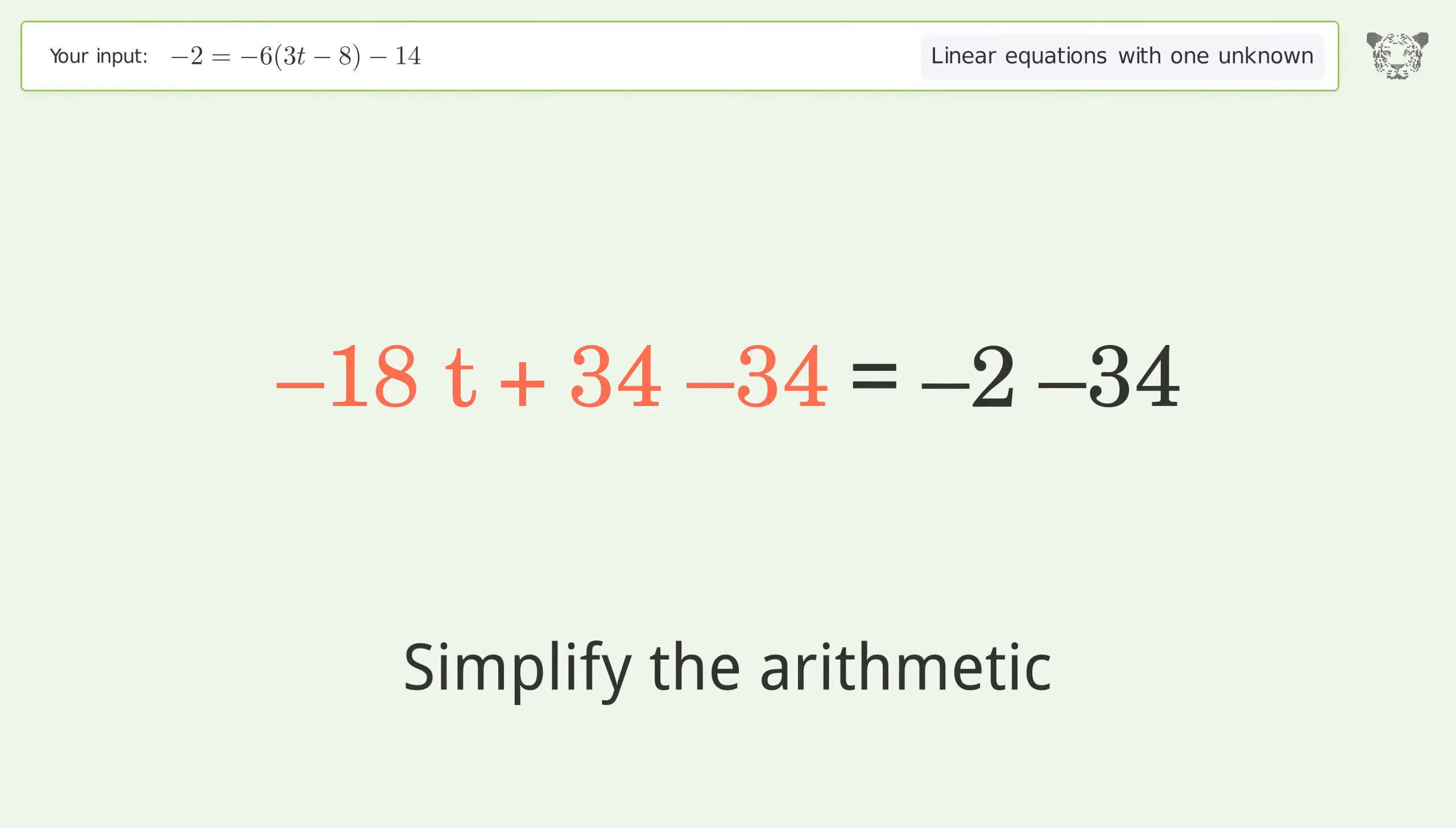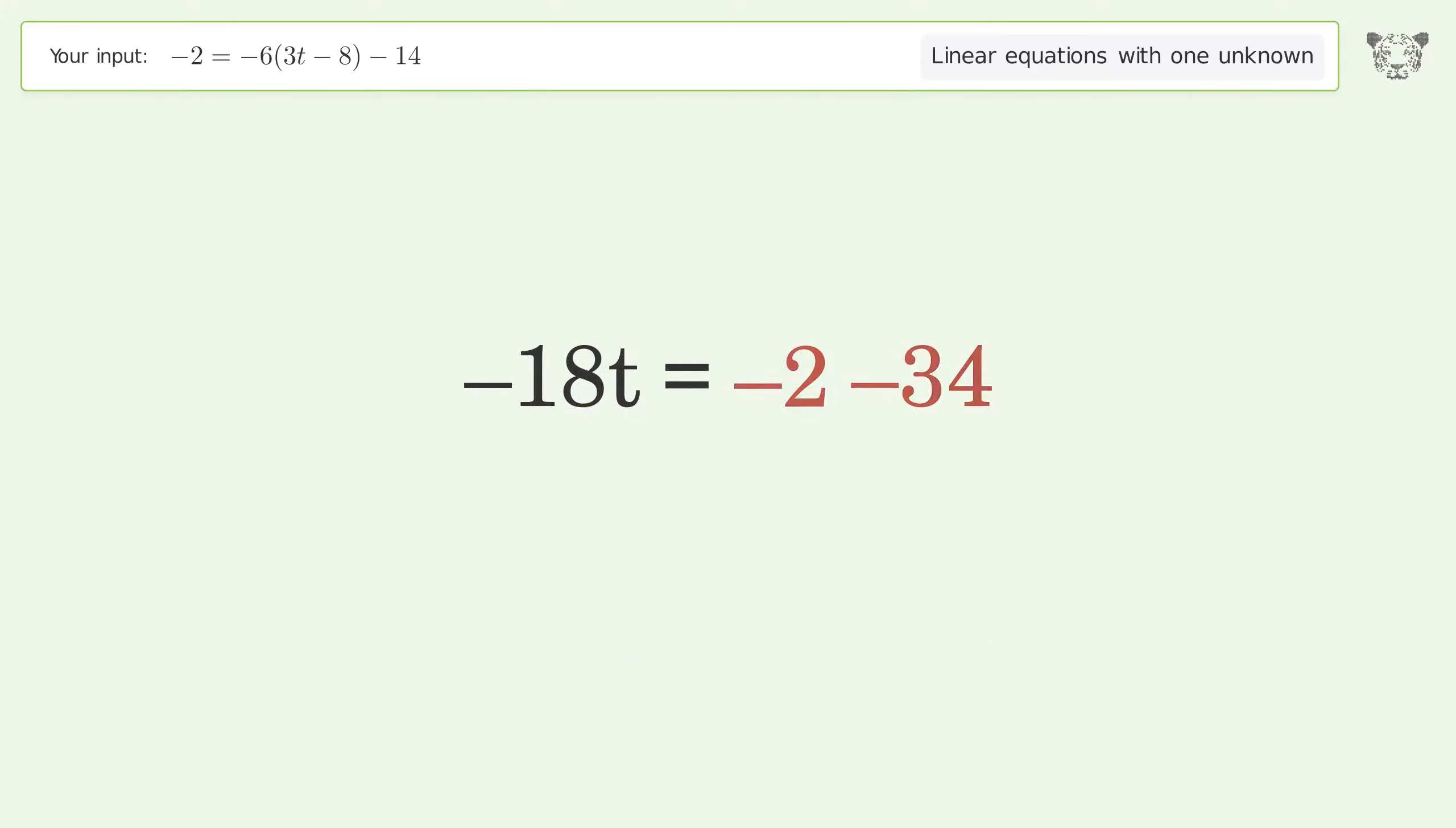Simplify the arithmetic. Isolate the t. Divide both sides by negative 18.